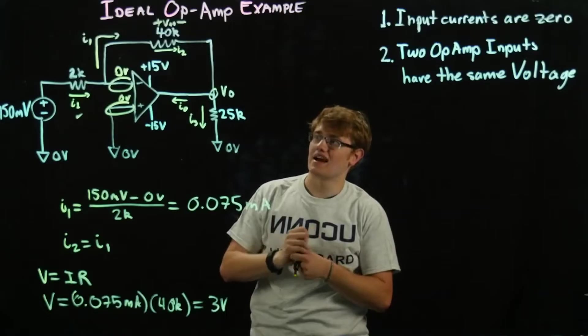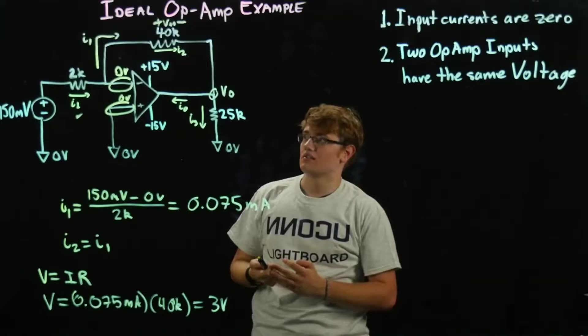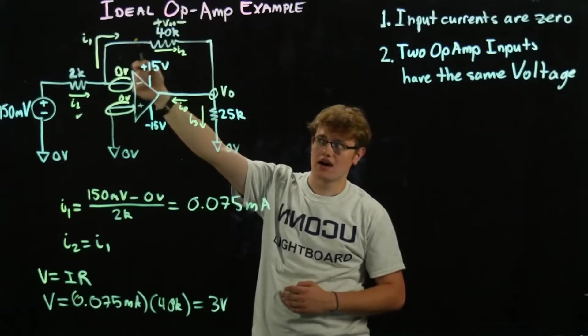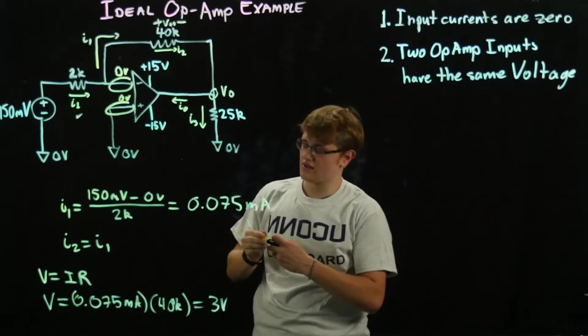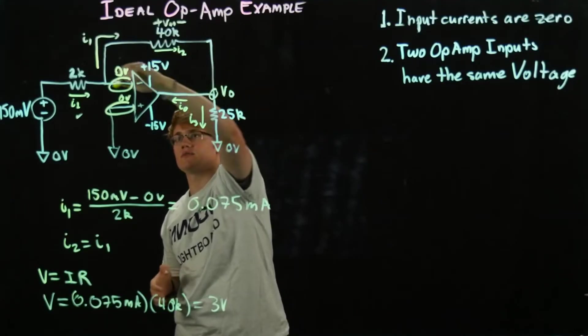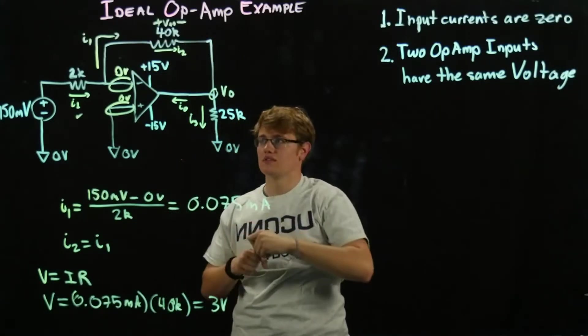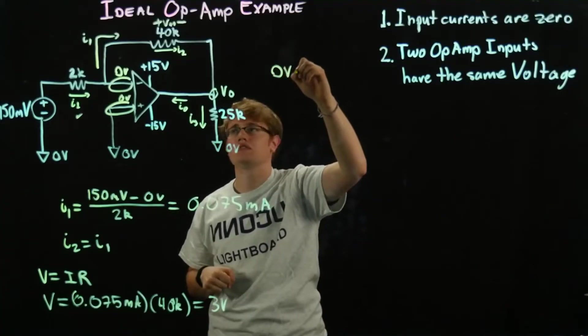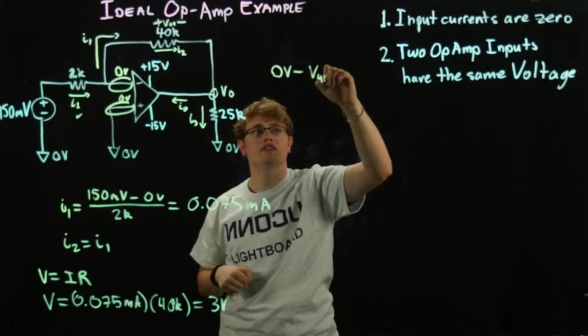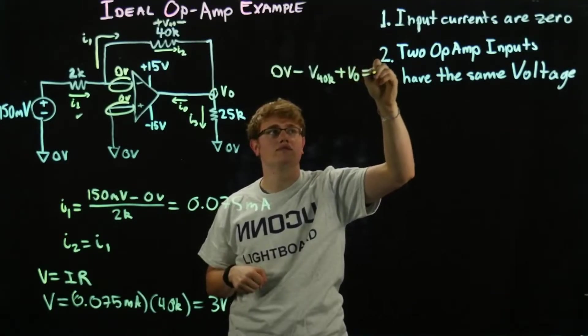So now we're going to try to find Vout. Now what does Vout equal? Well Vout has to just be zero minus this voltage. Why? Well because if we have our loop here, zero volts, if we're going around this loop right here, all of these have to add to be zero, right? So zero volts minus V40k plus VO equals zero.